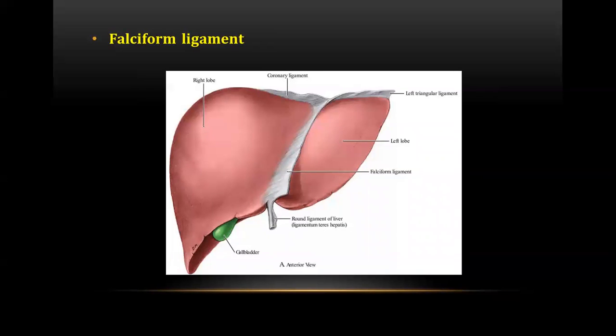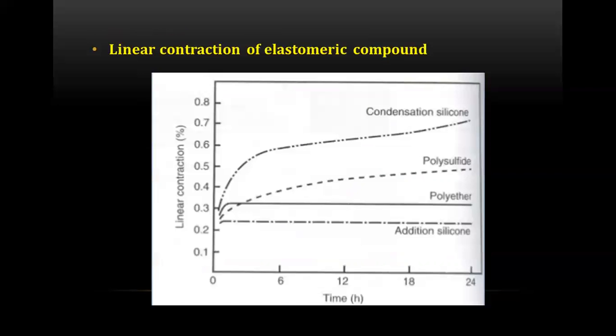The next question was a diagram-based question in which a diagram of the falciform ligament was given. The falciform ligament is a ligament that attaches the liver to the front body wall and separates the liver into the left medial lobe and the right lateral lobe.